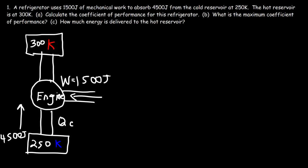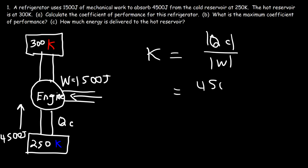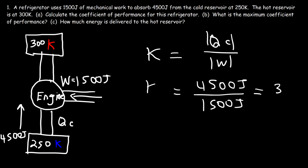The coefficient of performance, represented by the symbol K, is equal to QC divided by the absolute value of W. QC is positive 4,500 joules. W is really negative 1,500 since work is being done on the refrigerator, but we use the absolute value of 1,500. So 4,500 divided by 1,500 gives a coefficient of performance of 3.